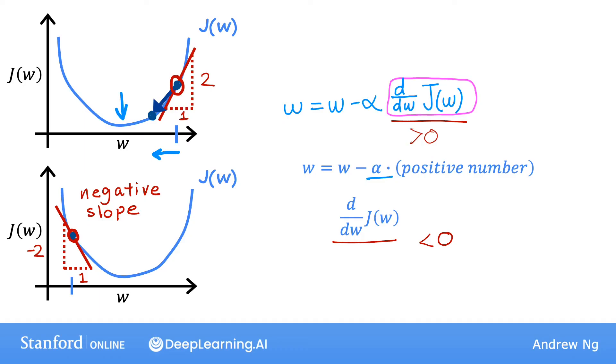So when you update w, you get w minus the learning rate times a negative number. This means you subtract from w a negative number. But subtracting a negative number means adding a positive number, so you end up increasing w. This step of gradient descent causes w to increase, which means you're moving to the right of the graph, and your cost J has decreased. Again, gradient descent is doing something reasonable, getting you closer to the minimum. Hopefully, these last two examples show some of the intuition behind what the derivative term is doing and why this helps gradient descent change w to get you closer to the minimum.